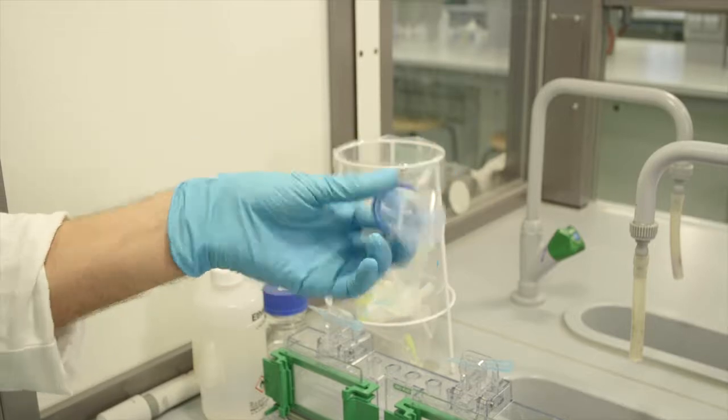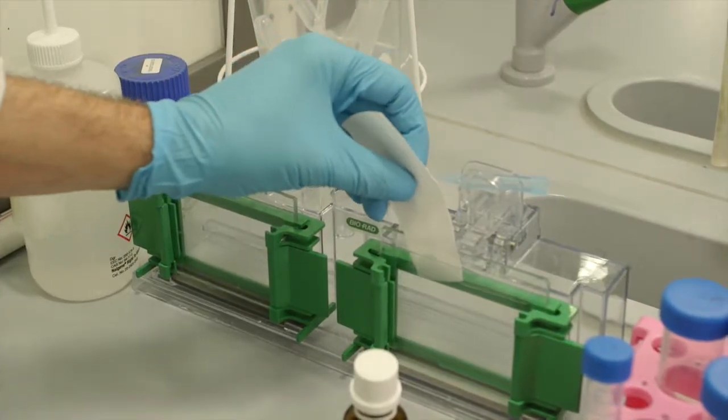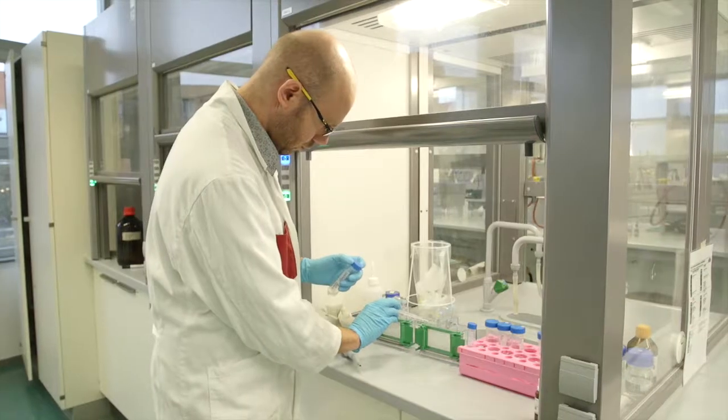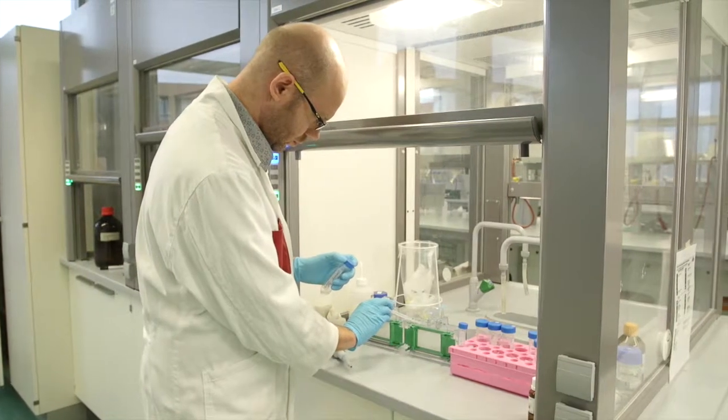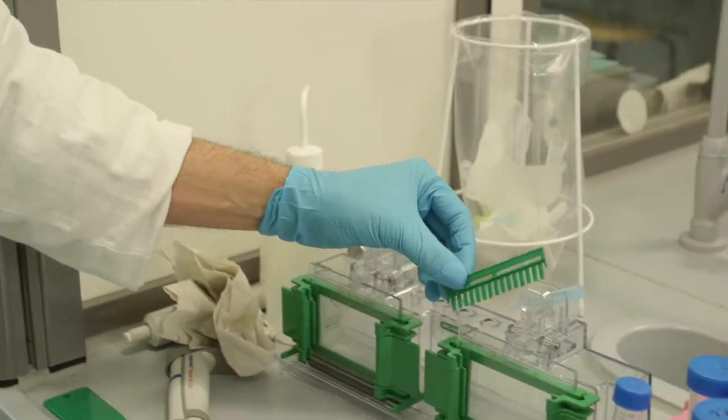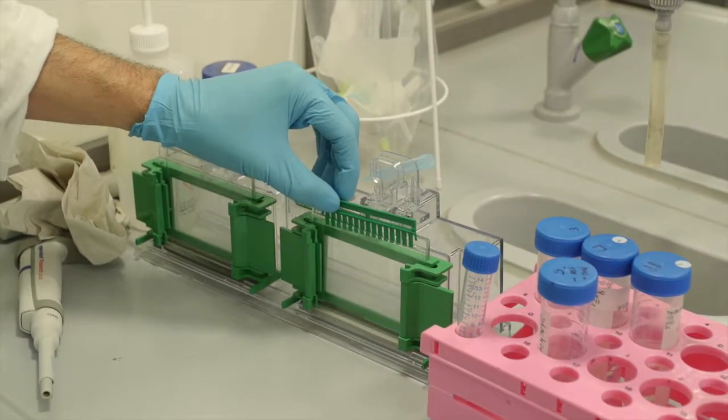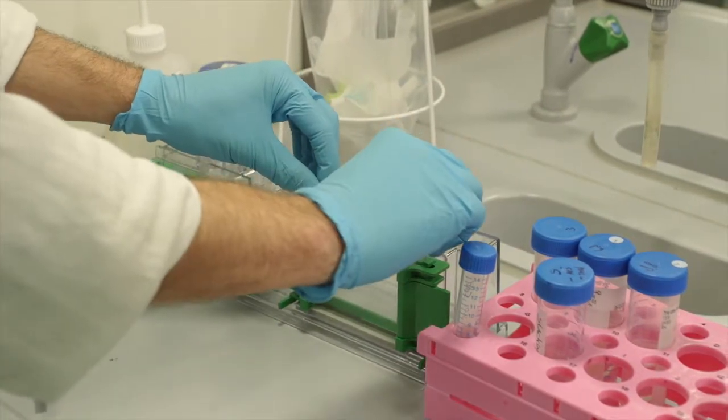After the running gel has polymerized, the isopropanol is removed with a filter paper. Pipette the stacking gel solution on top of the running gel. Place the comb between the glass plates and remove any liquid that may overflow straight away. Leave the gel to polymerize.